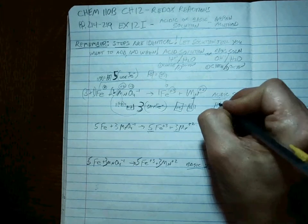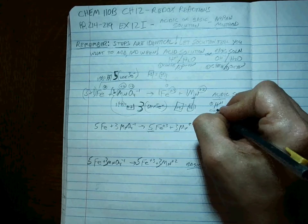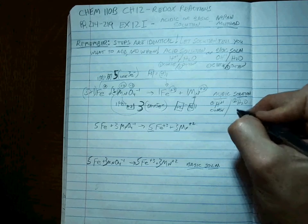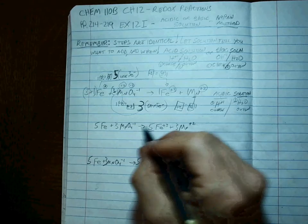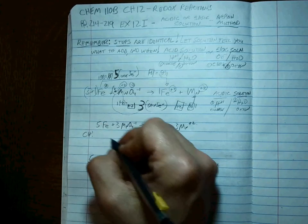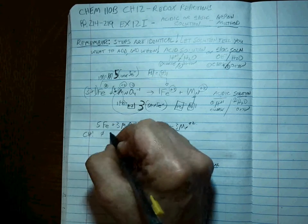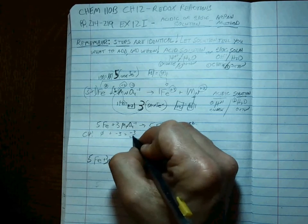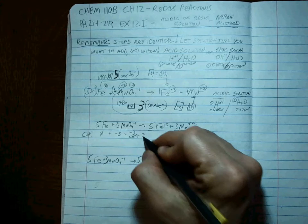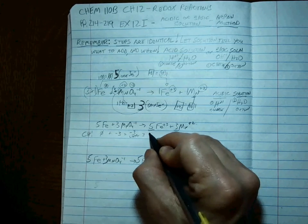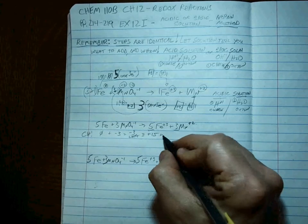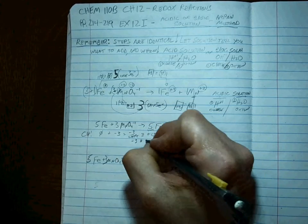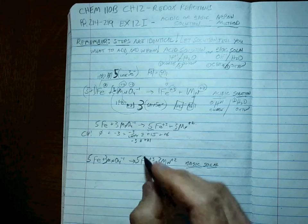Acidic solution means H plus one first to balance the charge, and then H2O second to balance the oxygen. Let's do that right here. Charge - let's check out the charge. Five times zero plus three negative three, so it's negative three on the left. And what do we got here? Five times plus three is plus 15, three times plus two is plus six. So we've got negative three equals plus 21.